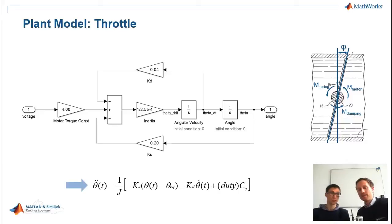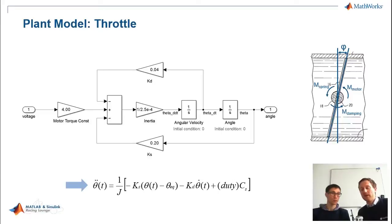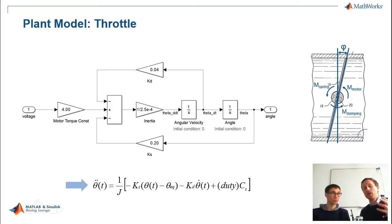Setting up a Simulink model is very easy. What you see is theta double dot — the double-dot time derivative of our angle. We integrate it twice and then we get the angle. This also allows us to introduce all the parameters we have defined. Starting from that model, which is a pretty basic and easy assumption of a throttle, I will hand it over to Daniel, who will show us how to control that system.